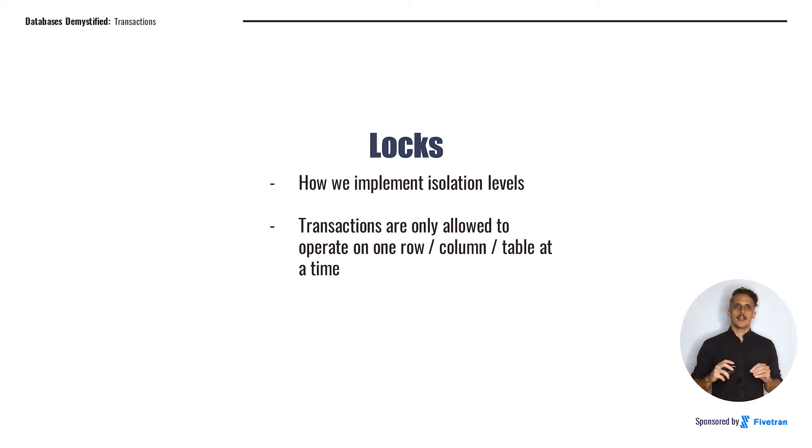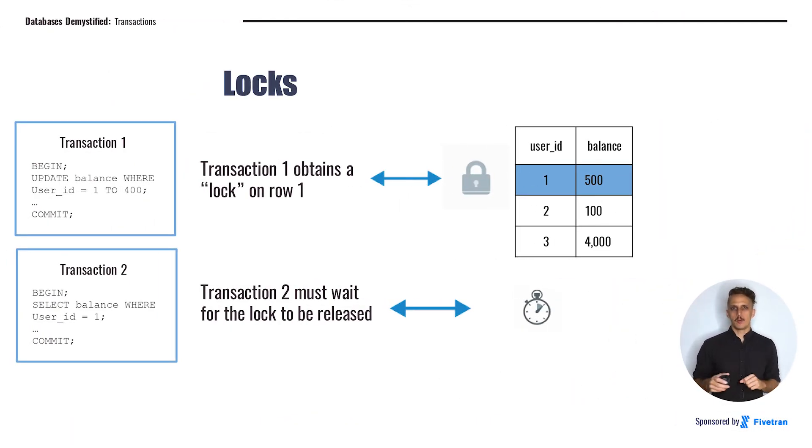That is, if two transactions want to operate on the same data at the same time, the database will place a lock on the data when the first transaction starts so that any other transactions can't operate on that data until the lock is released. Other transactions have to wait their turn in order to access those data. Different isolation levels will have different locking strategies. Let's take a look at a stylized example to get a feel for how this might work in practice. In this example, we've got two transactions. Transaction one wants to update the balance of row one, and transaction two is going to select that balance for some other operation that it's performing. While transaction one is running, the database is going to place a lock on that row so that the select in transaction two will not be able to run until that lock is released.